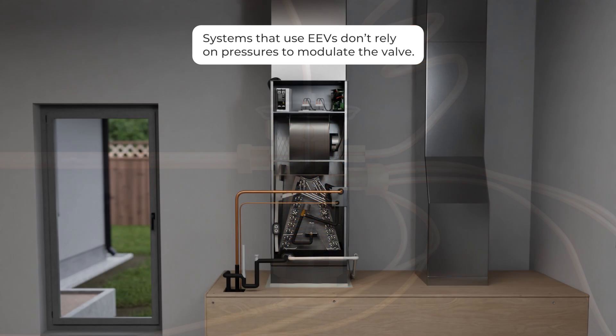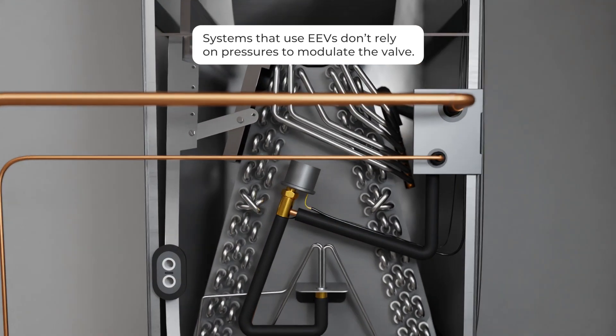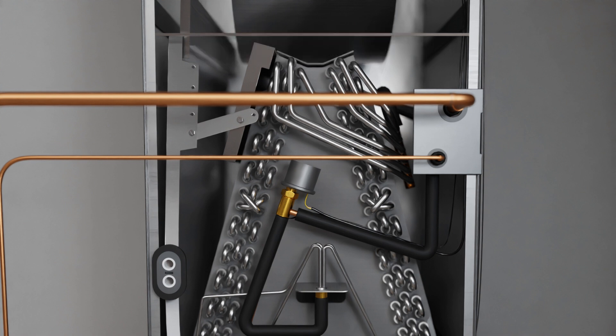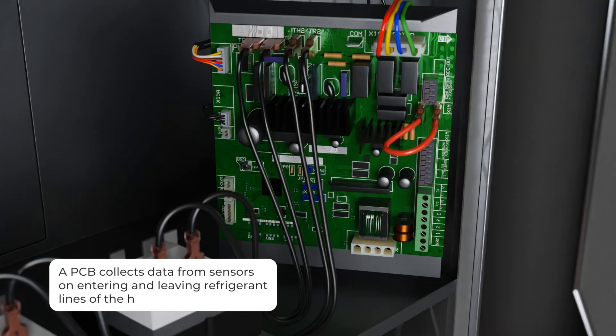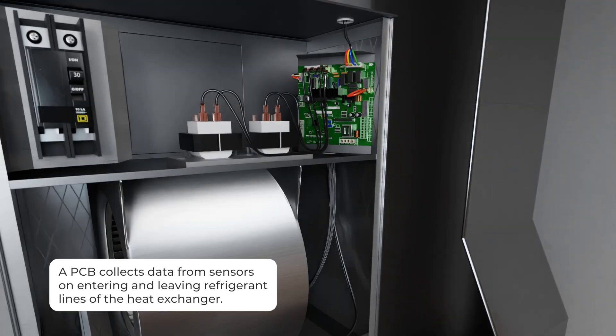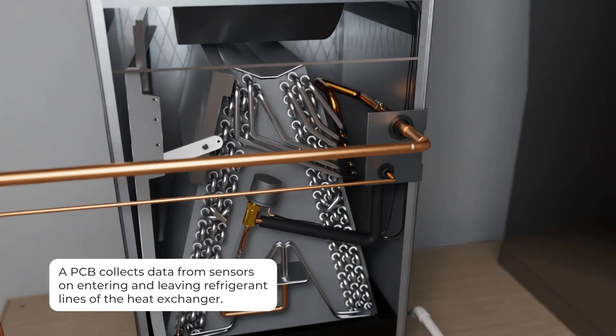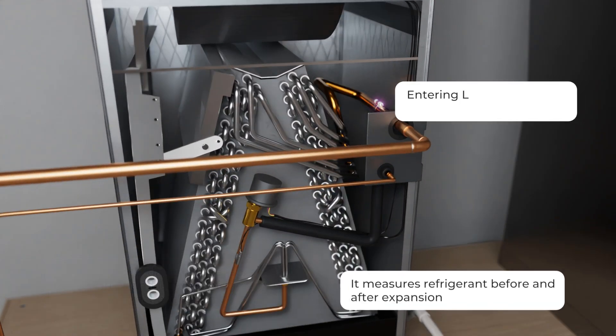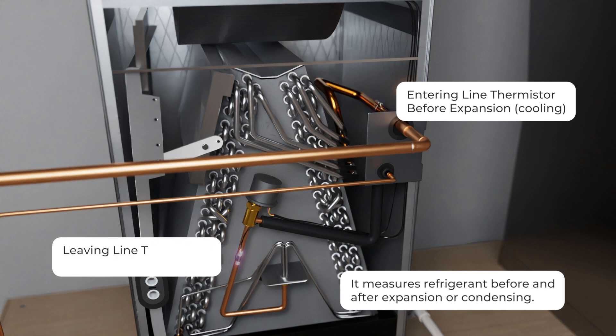Systems that use EEVs don't rely on pressures to modulate the valve. Instead, a printed circuit board, or PCB, collects data from sensors on both entering and leaving refrigerant lines of the heat exchanger, essentially measuring refrigerant before and after expansion, or condensing depending upon the mode.